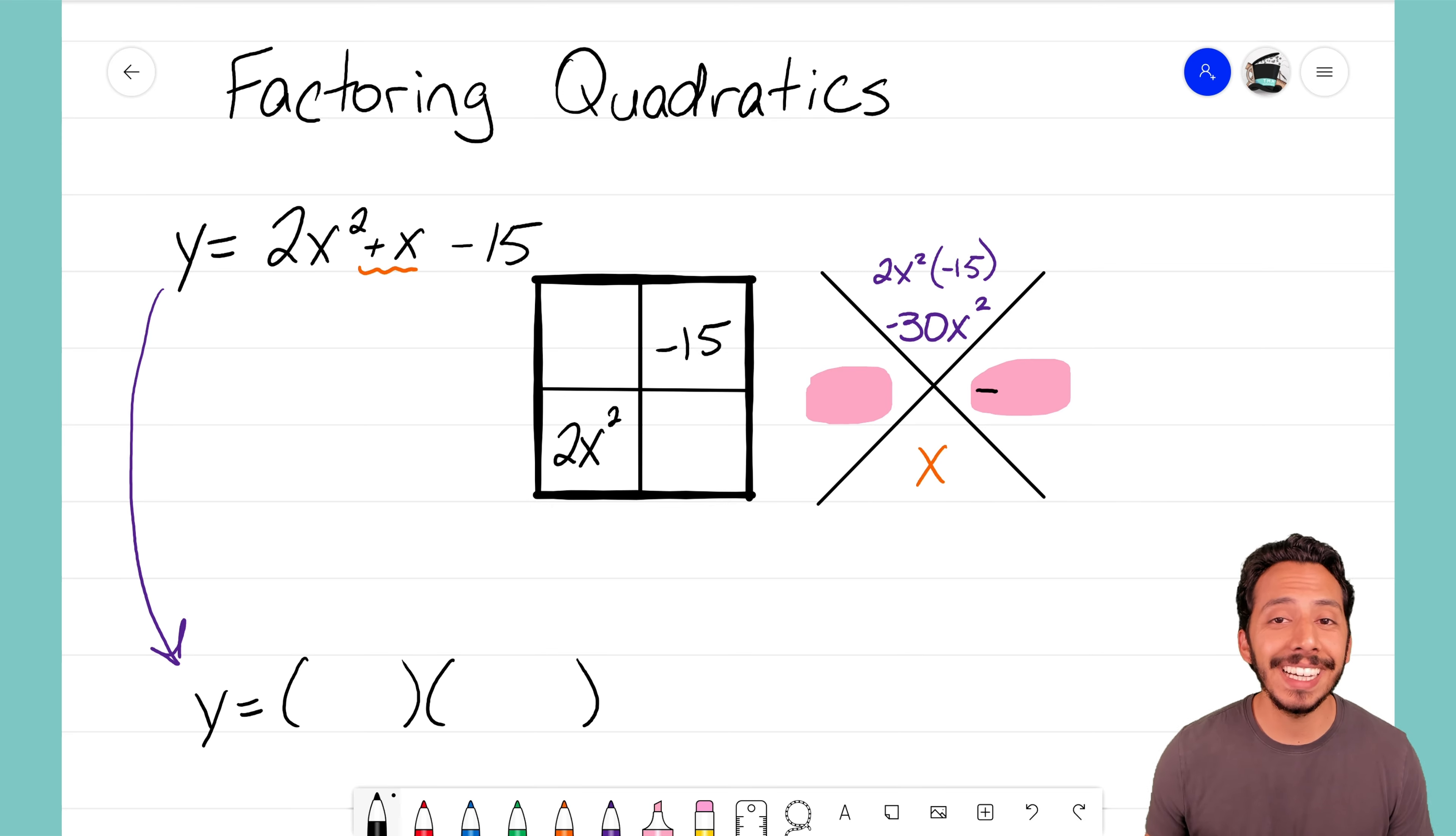So then I get to the next set of factors for negative 30 and I think what we're going to come up with is, I'm sorry, 6x and negative 5x. And let's think about that. 6x times negative 5x makes negative 30x squared. 6x minus 5x does leave us with a single x variable.